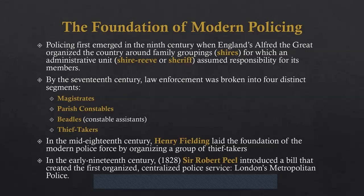If we jump ahead to the early 19th century — 1828 — a person by the name of Sir Robert Peel, who was later knighted for what he did, introduced a bill in Parliament that created the first organized, centralized police service: London's Metropolitan Police. So 1828 is the first time we actually have a police organization, a police service, in England. That always blows my mind — you think about the Revolutionary War, Declaration of Independence, and Constitution, and we didn't have a real police force. The world's first police force was in 1828.